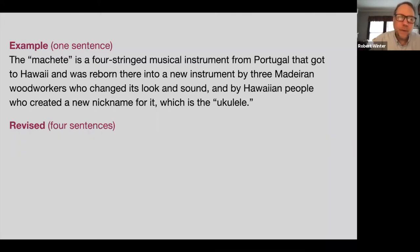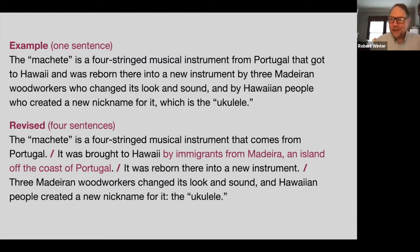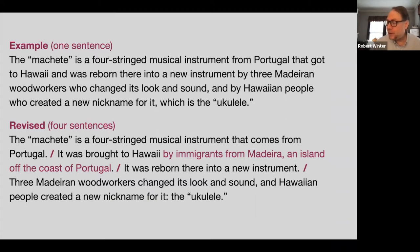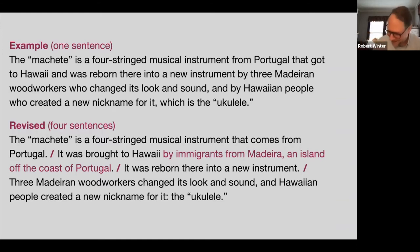You can look at it or read along with me. 'The machete is a four-stringed musical instrument that comes from Portugal. It was brought to Hawaii by immigrants from Madeira, an island off the coast of Portugal. It was reborn there into a new instrument. Three Madeiran woodworkers changed its look and sound, and Hawaiian people created a new nickname for it — the ukulele.' Easier? I imagine you're saying yes.